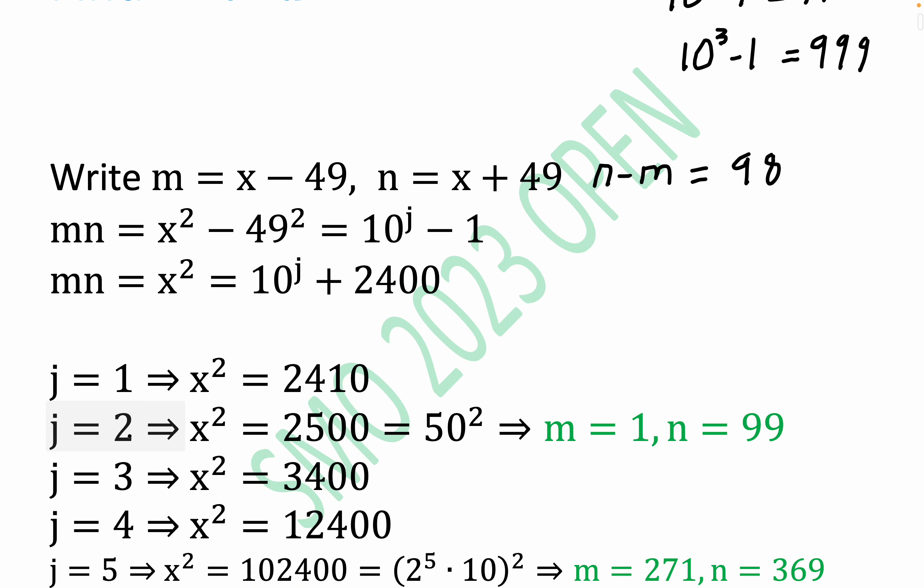So now notice that the second case j equals 2 is what gets the job. And you get m equals 1 and n is equal to 99. x squared is equal to 2,500. That means x is equal to 50. And so this would be 50 minus 1 right here, and this would be 50 plus 49. See, so the x is in the middle of the two numbers. And so we get x is 50 and that leads to the trivial one that we noted.